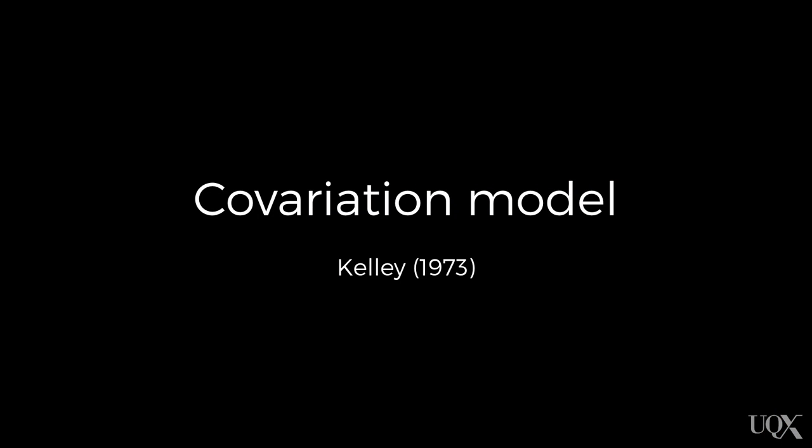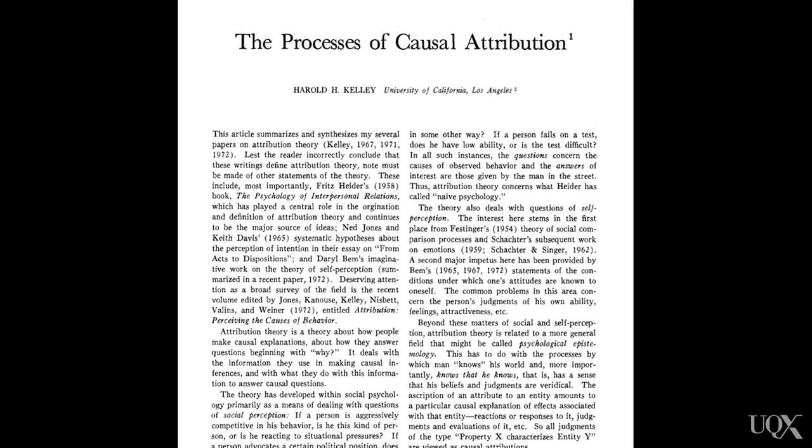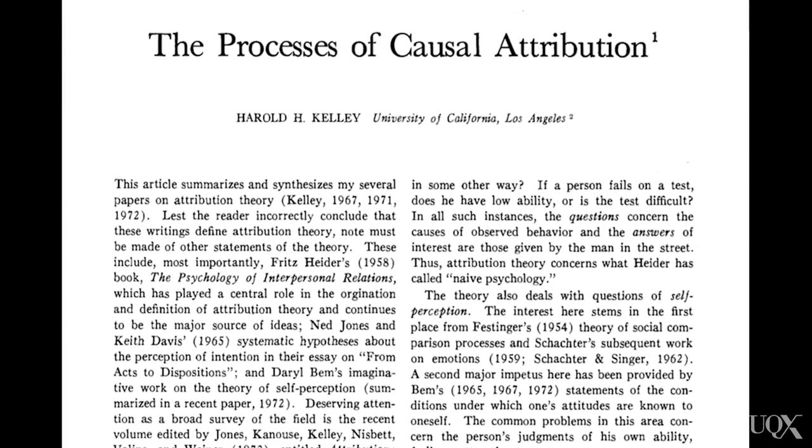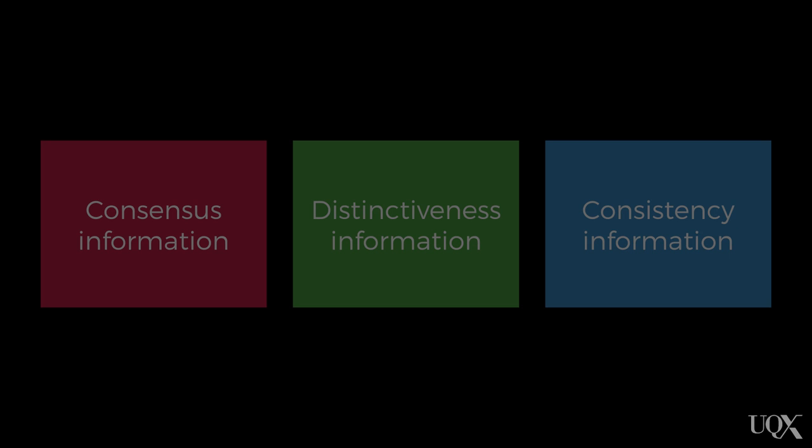Heider was thinking about how we attribute causes for single behaviours that we observe. It's quite common that we get to see a person's behaviour more than once, however, especially our work colleagues, friends, and family. In this instance, we have more information than just our schema associated with the context that the behaviour is performed in. Kelly's covariation model describes the sorts of additional information that we have when observing multiple behaviours, and how we can use that information to make different types of attributions. The idea that Kelly proposed was that we attribute a behaviour to the cause with which it co-varies over time — this is called the covariation principle. To help us do this, Kelly thought that we paid attention to three particular types of information.